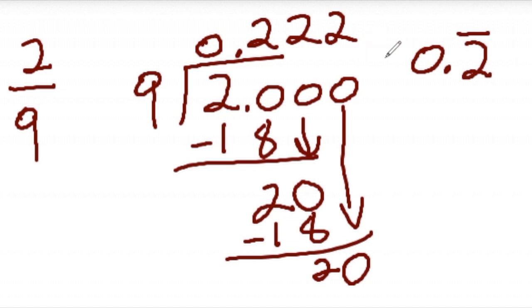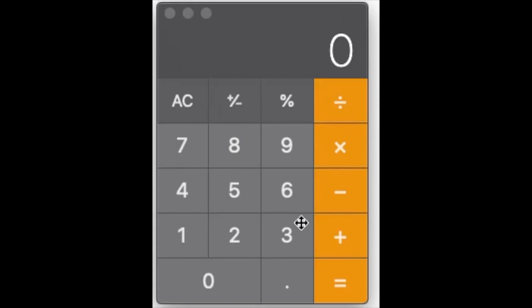So if you were to do this on a calculator, you would see that the two repeats forever. You can see if we try it on a calculator, if we do two ninths, which we know is two divided by nine, let's see what we get.